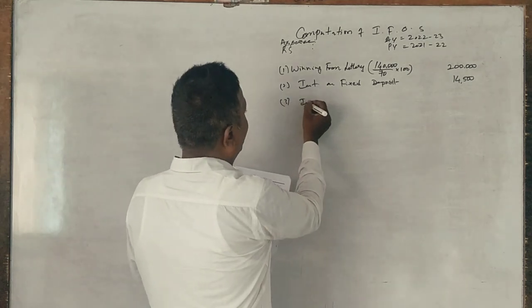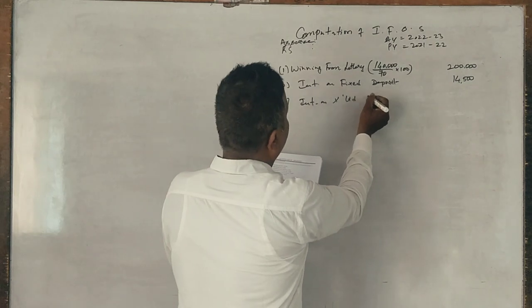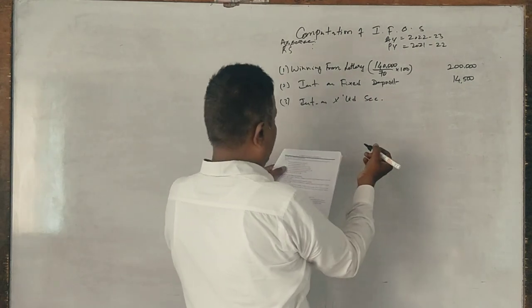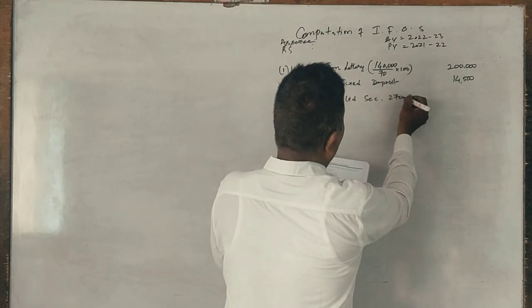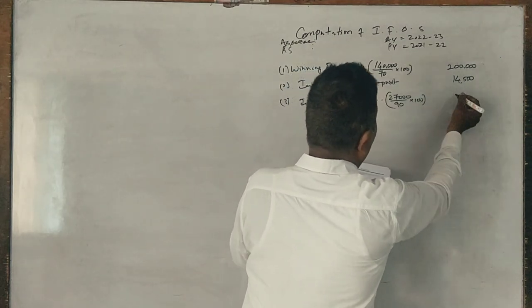Interest on X-Limited securities, 27,000 divided by 90 into 100 equals 30,000.